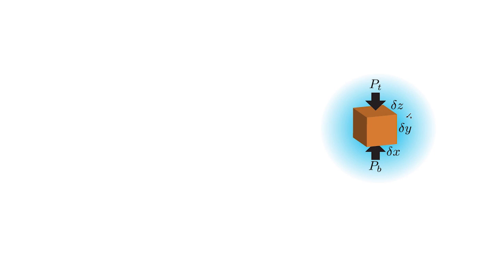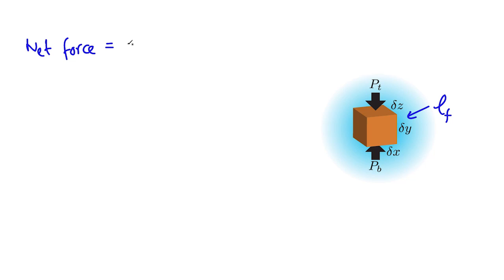In order to calculate this, here we have a small object immersed in a fluid, and this fluid has got density ρ_f. If we look at the force acting on this object, then the net force is going to be the pressure difference between the top and the bottom times the area. So the net force upwards will be P_b minus P_t, and then we multiply that by the area, which is going to be Δx times Δz.